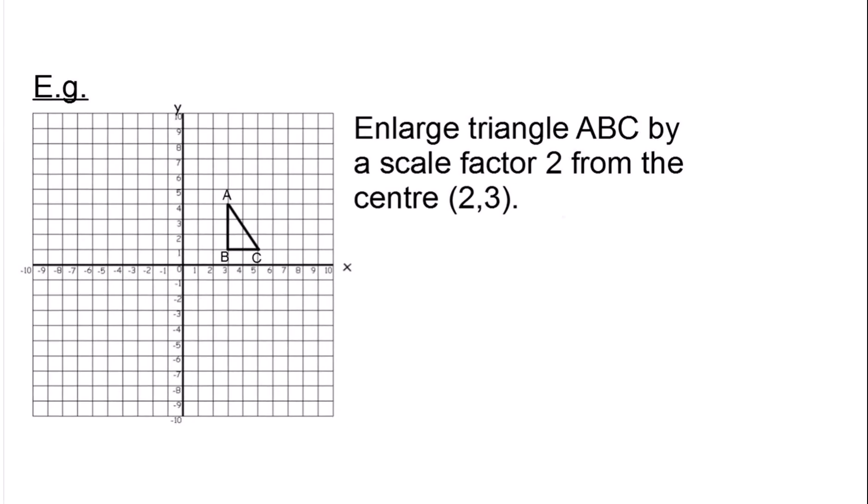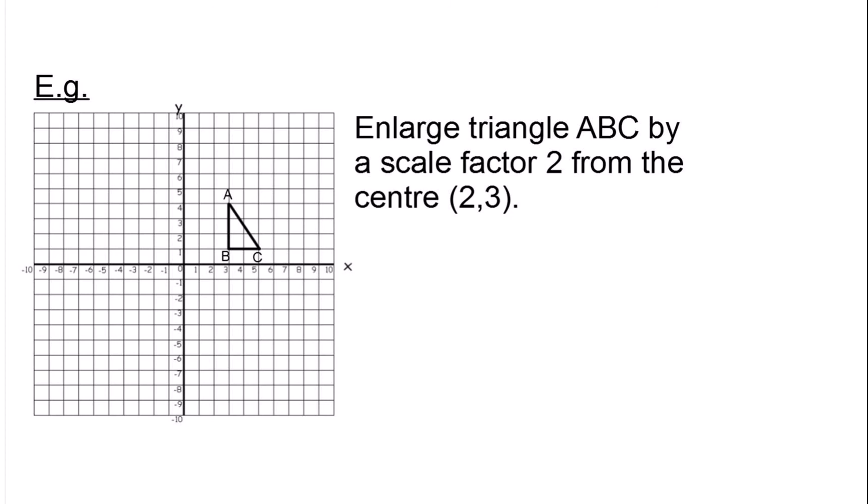The first example says: enlarge triangle ABC by a scale factor of 2 from the centre (2, 3). The centre is where you start the enlargement from — it's very important and is often given as a coordinate. If it's not given as a coordinate, it will be marked on the grid. So (2, 3) is the centre of enlargement.